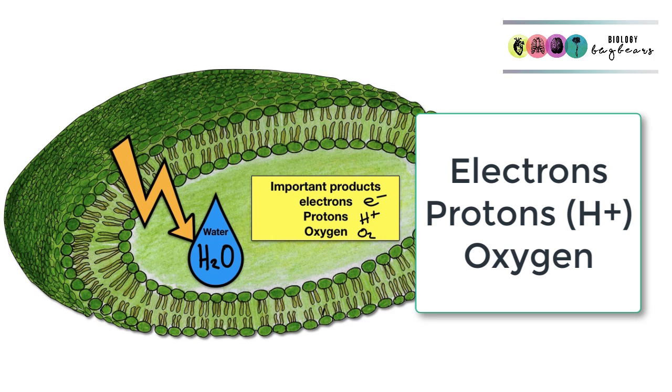Photolysis of water produces three very important products: electrons, protons, and oxygen.